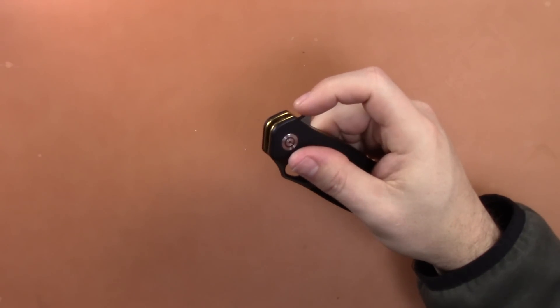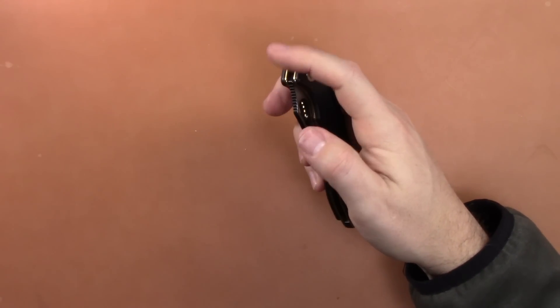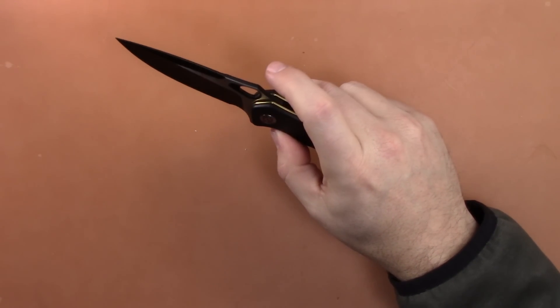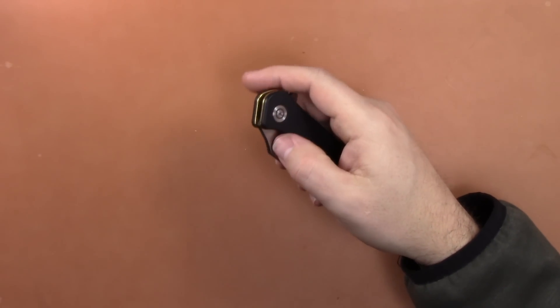Usually the flipper is too, the detent is too strong. You know, it's a flipper to use the thumb stud deployment, or not thumb stud, but in this case the thumb hole. And in this case it's not.